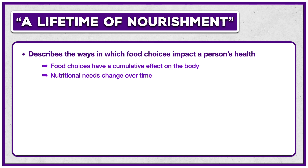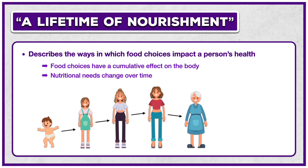A lifetime of nourishment describes the ways in which food choices impact a person's health. The two major implications are that food choices have a cumulative effect on the body, and that nutritional needs change over time. We accept that how we are fed as babies affects our health and development as children, what we eat as children affects our health as young adults, and what we eat as young adults has a lasting effect on our adult years. Each stage impacts our later years in life. We also accept that nutritional needs are unique at each stage — what we require as a baby is vastly different than what we need as an adult.